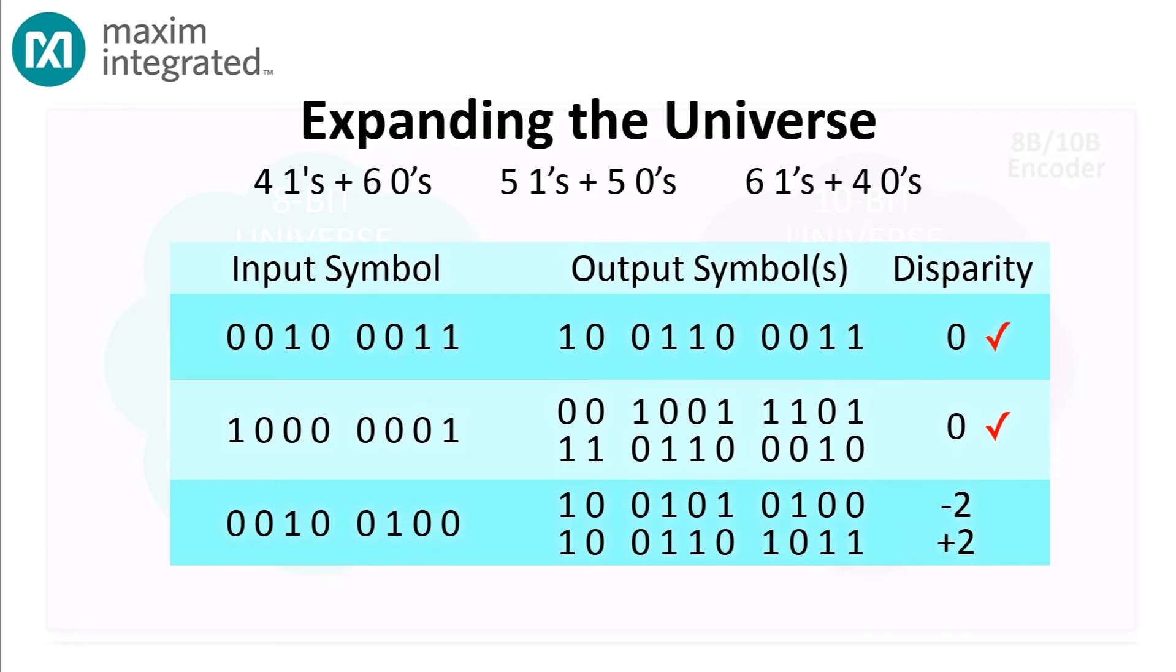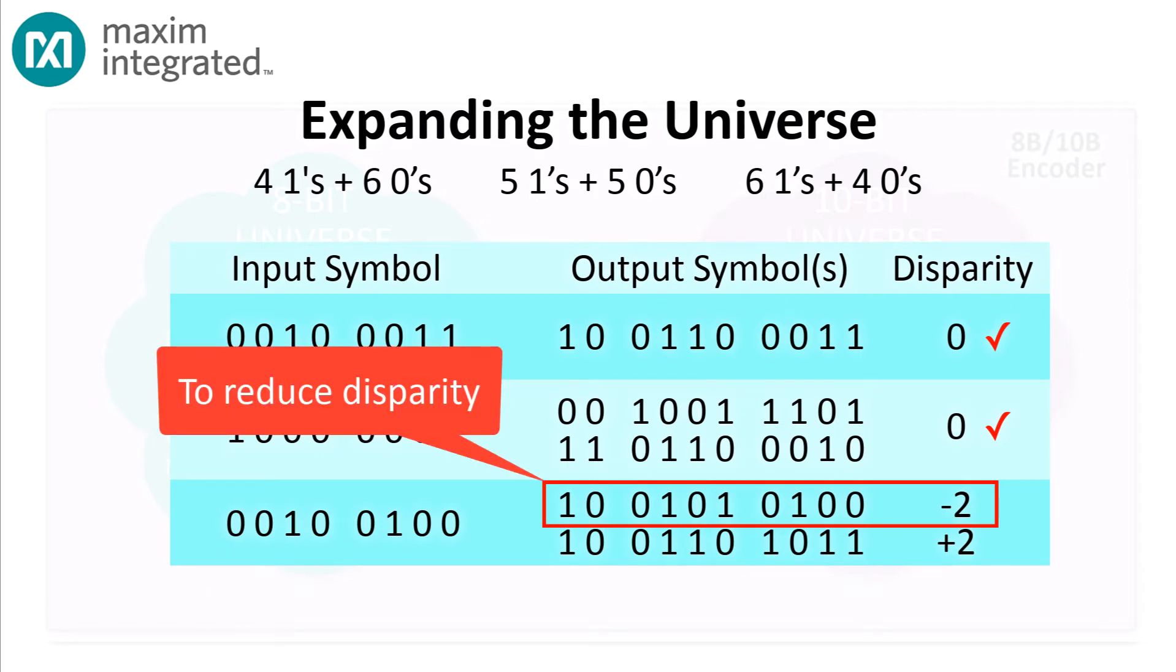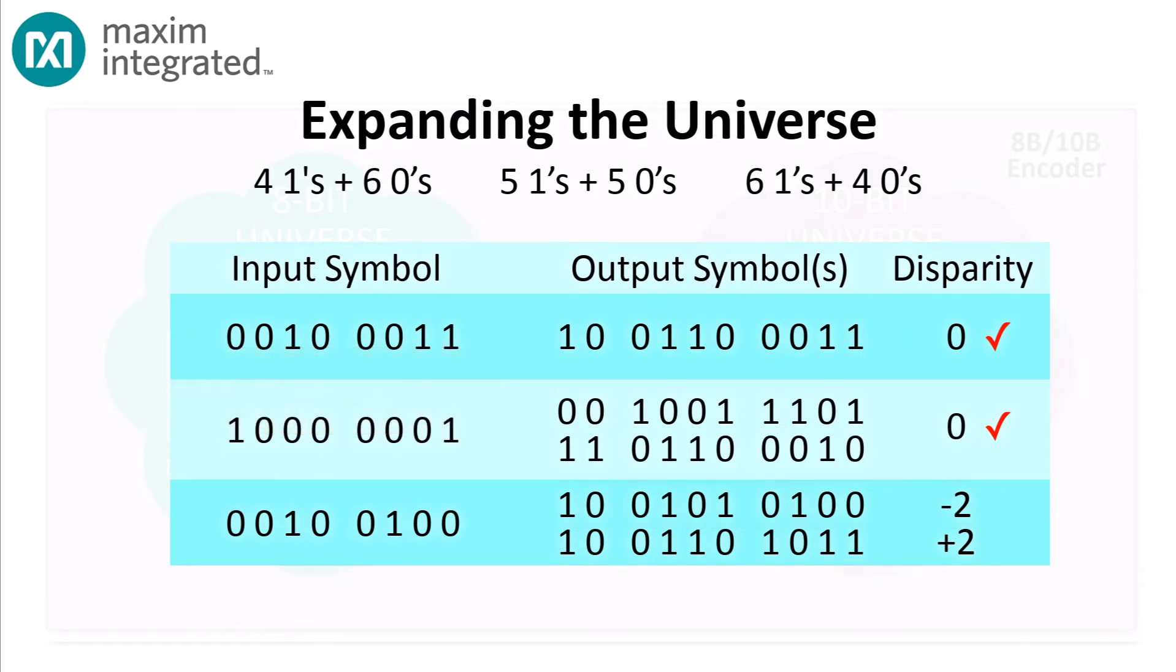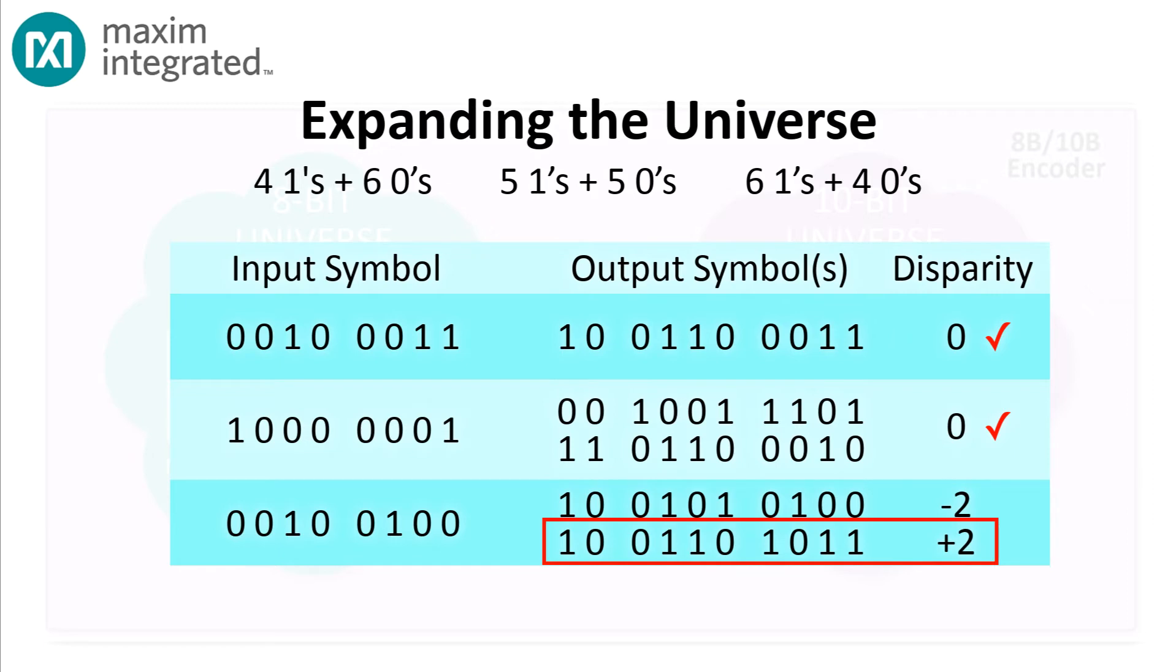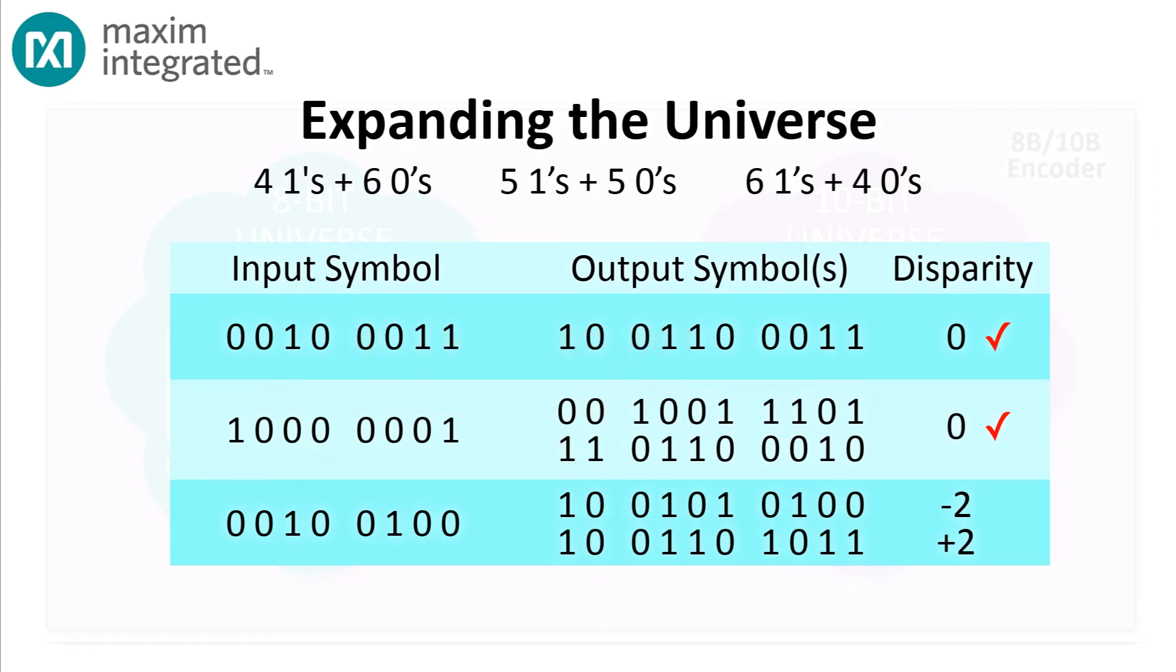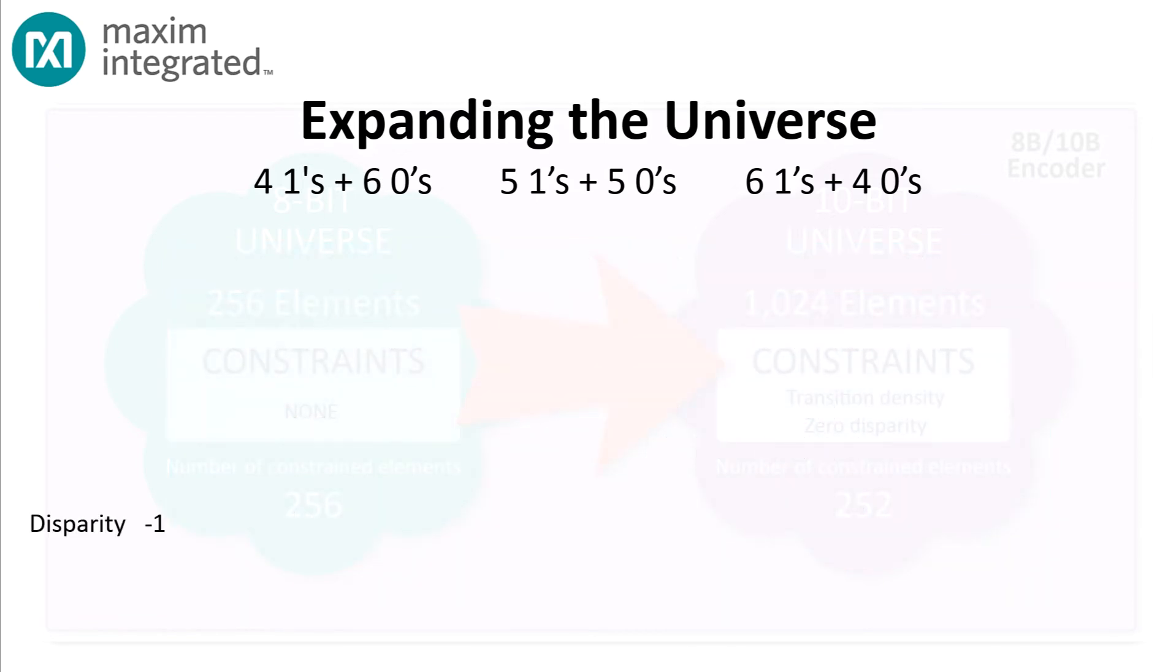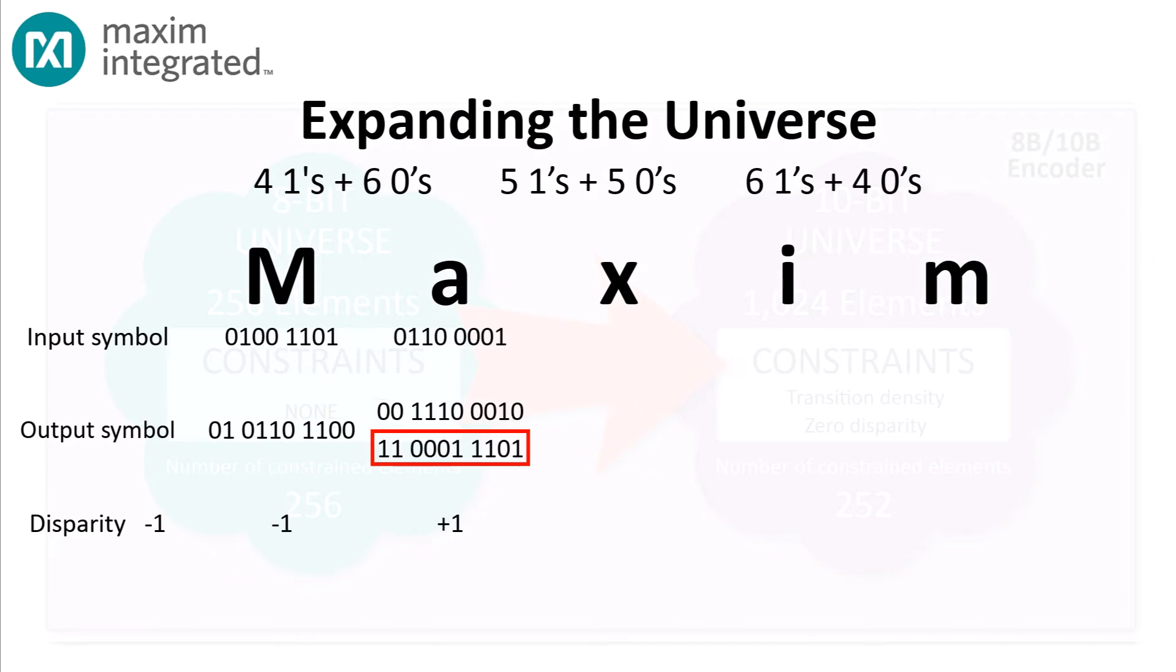Then, if the disparity needs to be reduced, we choose the code that reduces the disparity by 2. And if the disparity needs to be increased, we choose the code that increases the disparity by 2. By starting the disparity count at minus 1, we can make sure that the aggregate disparity is always minus 1 or plus 1, never larger.